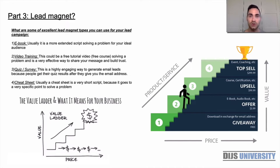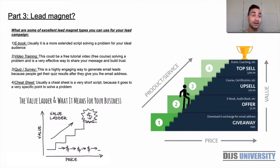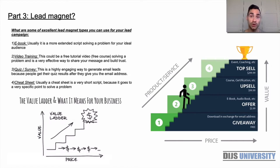Everything needs to be congruent — the lead magnet, the keywords you're going to target, the landing page, and even the first email swipe you send to your new subscriber where you deliver the free content. The value ladder shows that the more value you give over time — whether that's 30 days, 60 days, or 90 days and even longer — the more they trust you and your brand.